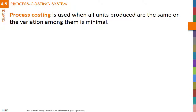Process costing is used when all units produced are the same or the variation among them is minimal. In contrast to job order costing, units of the same product are not treated differently. For example, each time MFD produces a fashion jacket, the costing system assigns it a cost that is the same as the cost of all other fashion jackets.